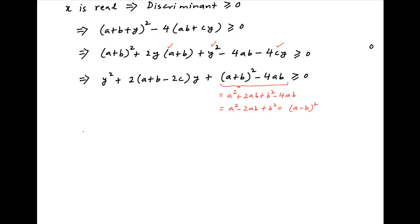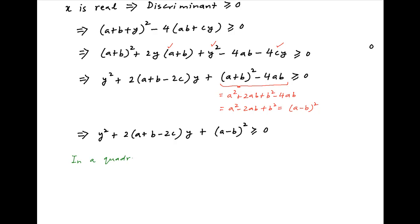Therefore this inequality can be written as y² + 2(a + b - 2c)y + (a - b)² ≥ 0. Now recall that for a quadratic expression at² + bt + c, if a > 0, then the expression is greater than or equal to 0 for all values of t if the discriminant b² - 4ac is strictly less than 0.